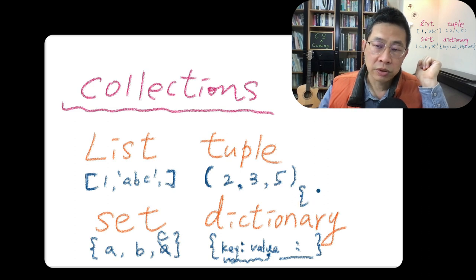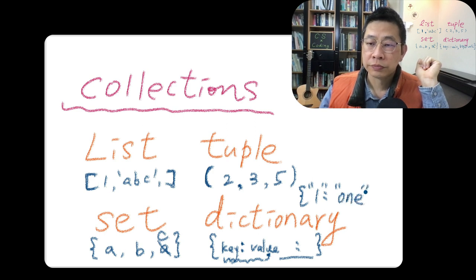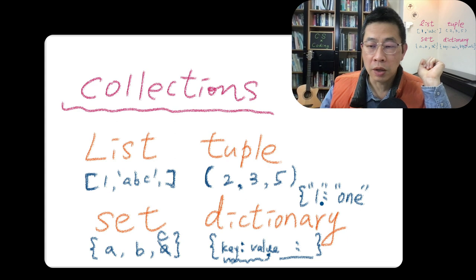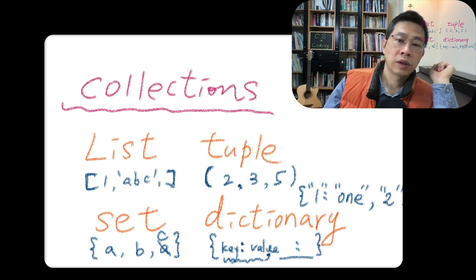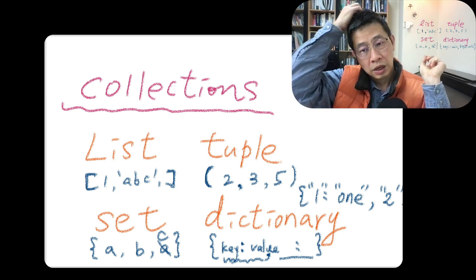So this is an example of the dictionary. Maybe you define one, a key one, string one. You define key one as O-N-E. One, number one, character one. Another key two is T-W-O, etc.